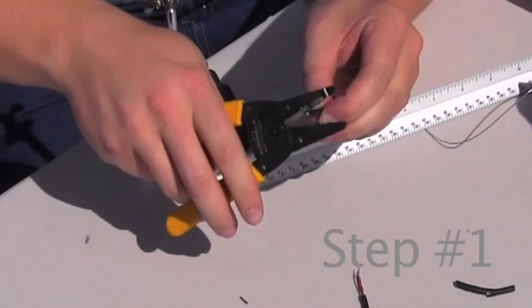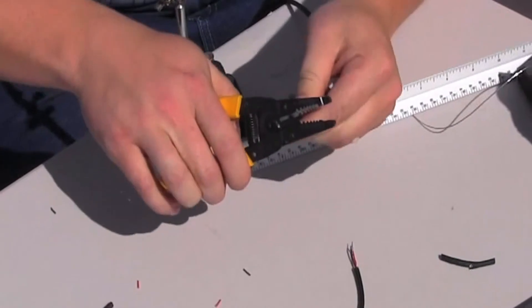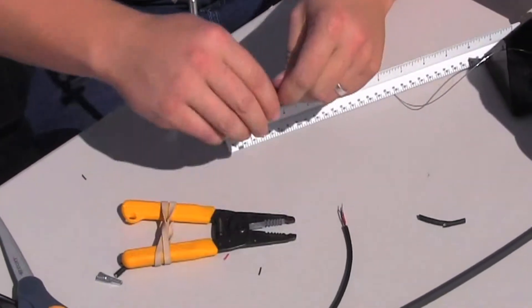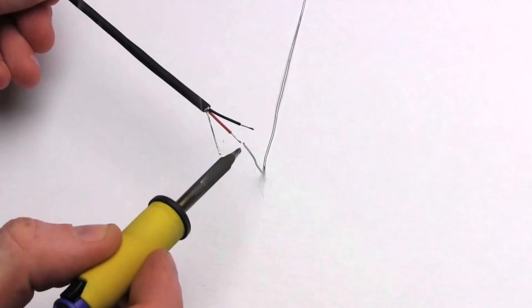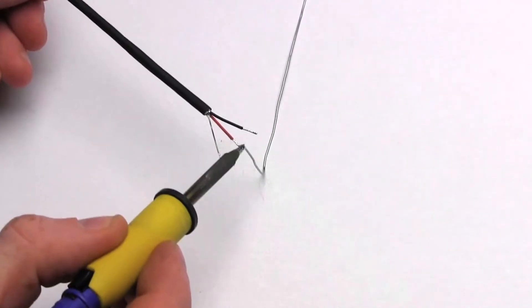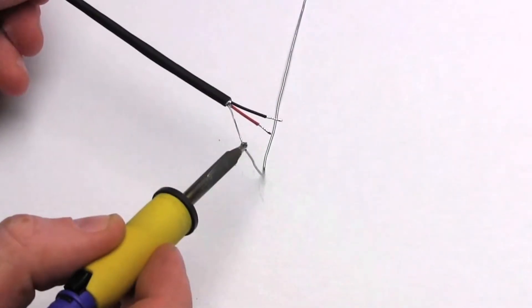Step one: strip the outer cable insulation 5 eighths of an inch while stripping and tinning the individual wires 1 quarter of an inch. Note that tinning the individual lead wires helps to eliminate cold solder joints by cleaning the individual strands and allowing solder to flow more freely.